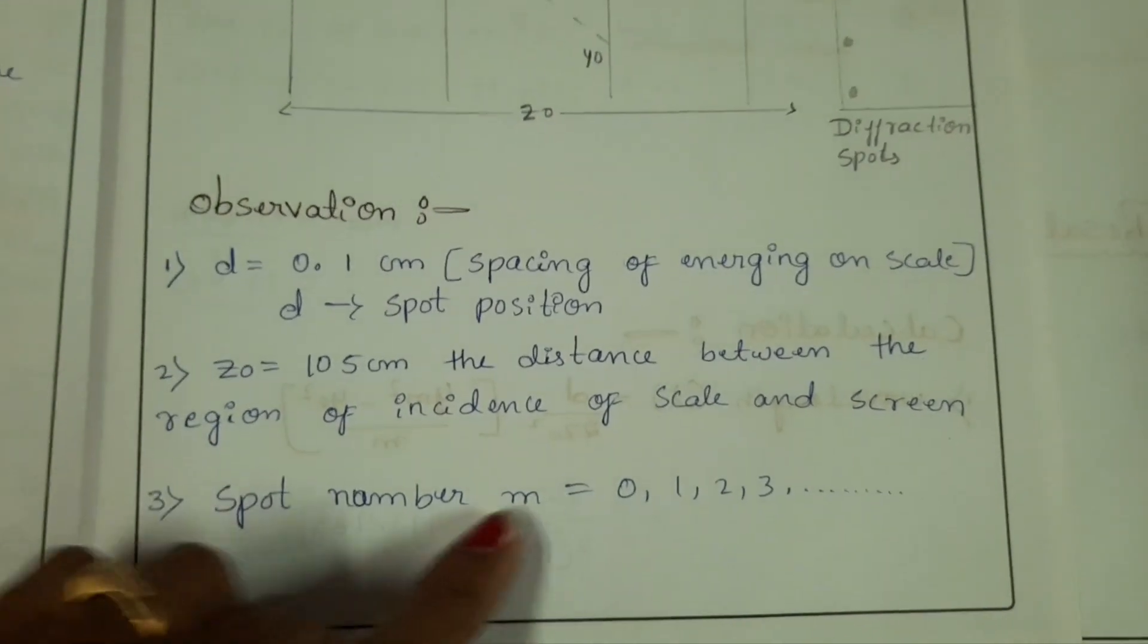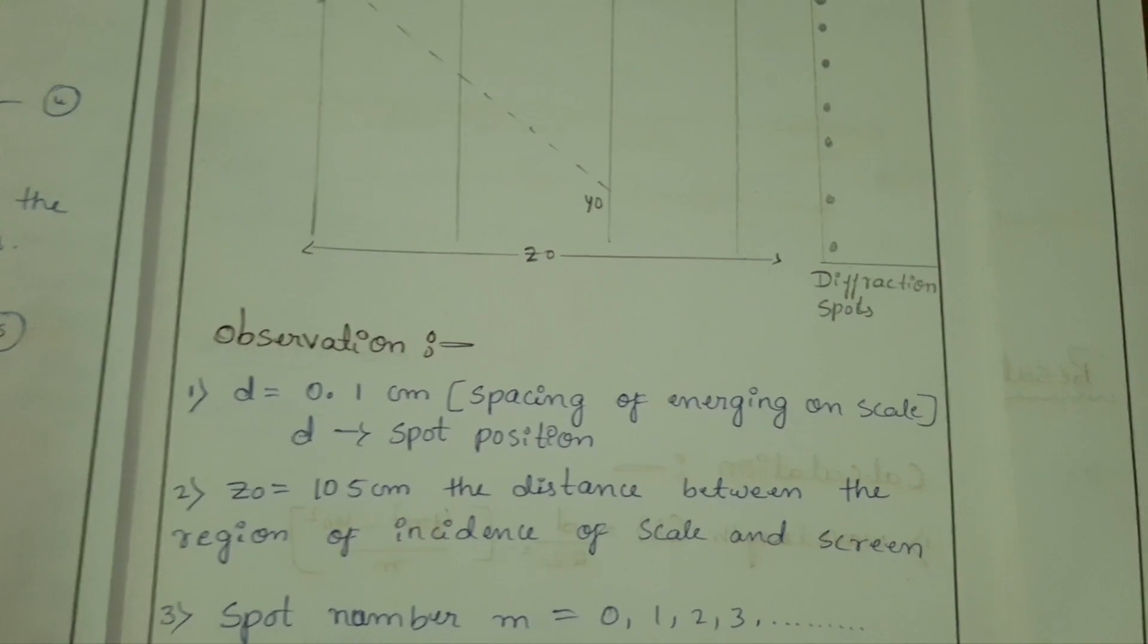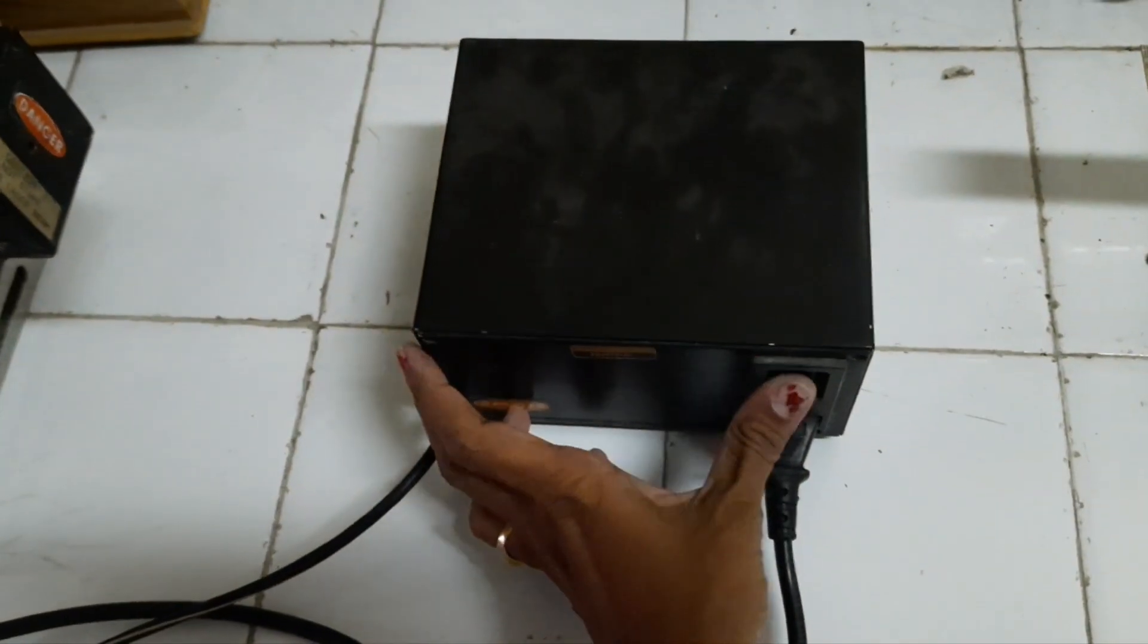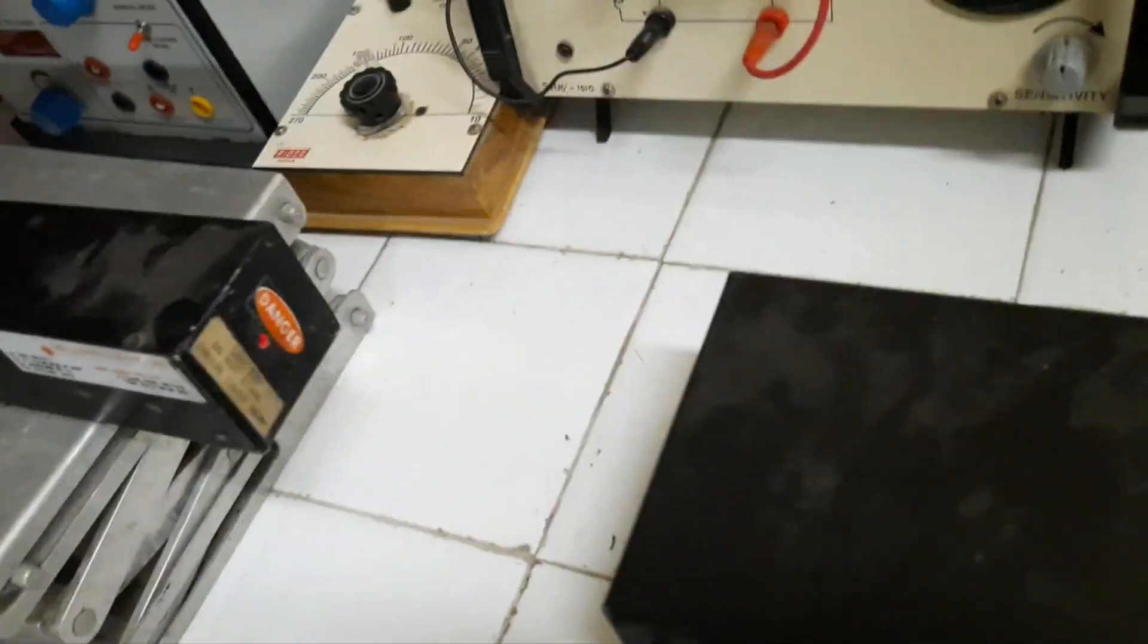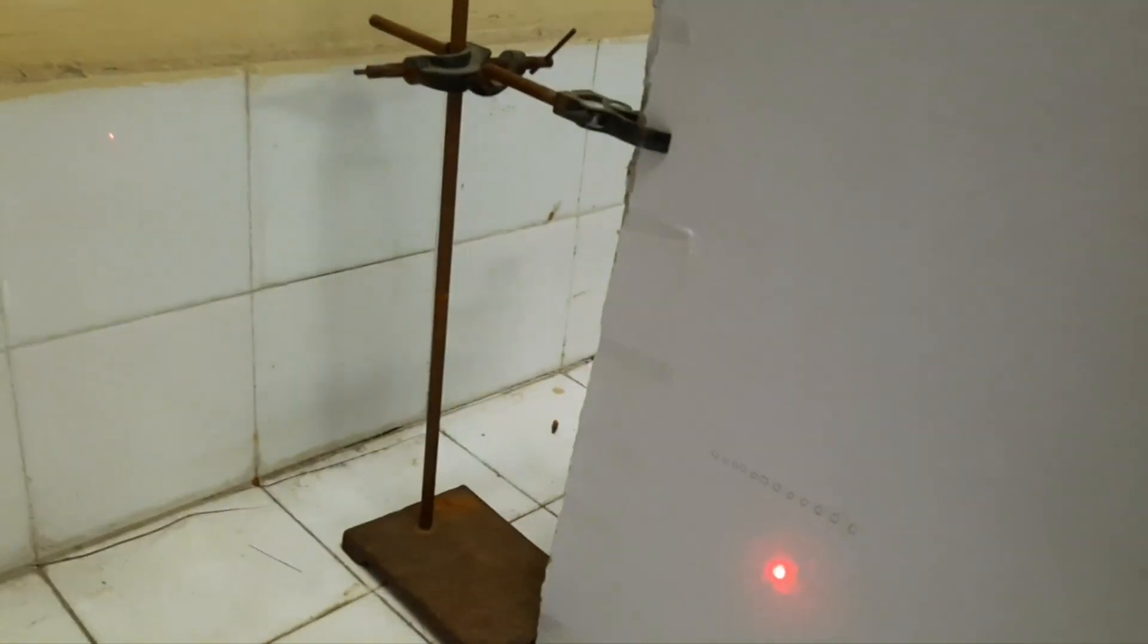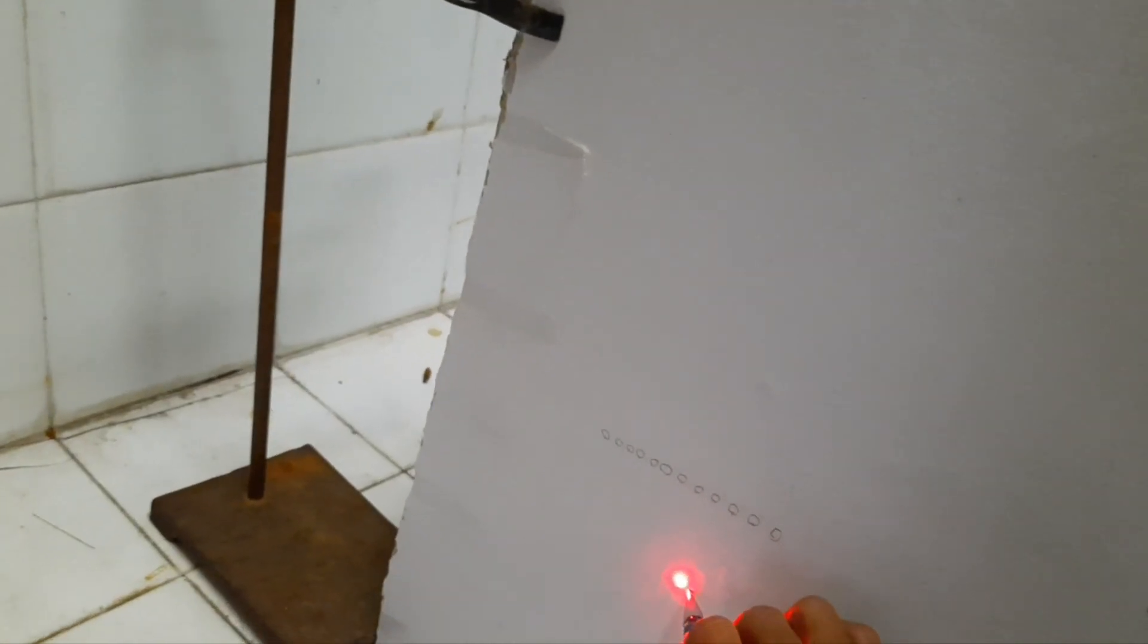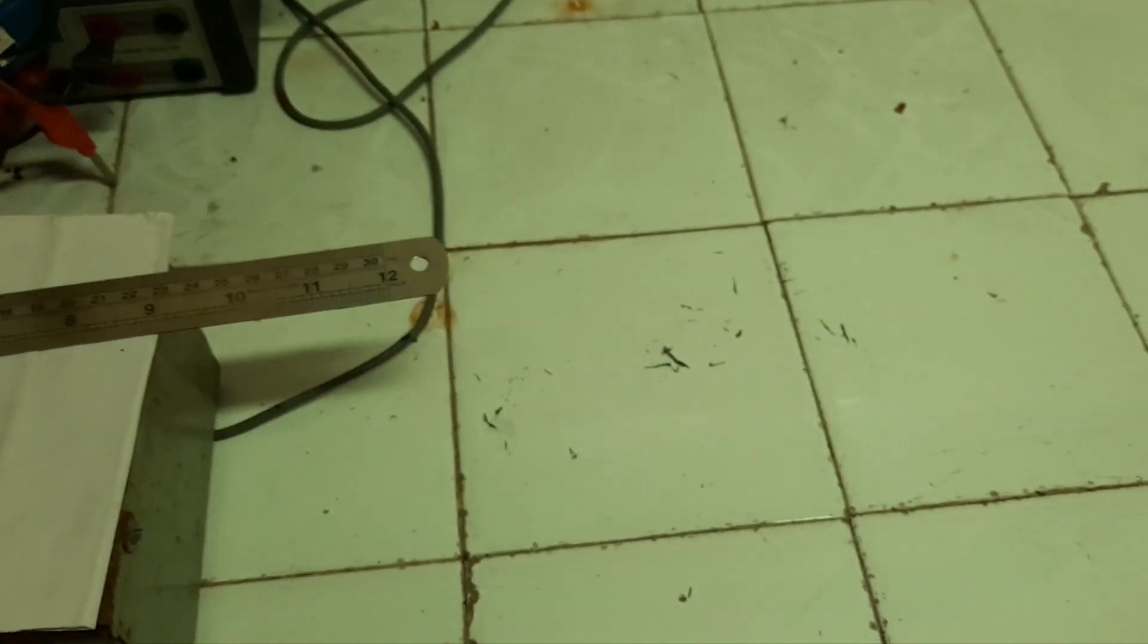Spot numbers you should note: 0, 1, 2, 3, and so on. Let us start the experiment. First, I will switch on the laser light. You should note the spot on the screen using pen or pencil. I will mark here. Then the laser must fall on the scale edge like that, you have to adjust.